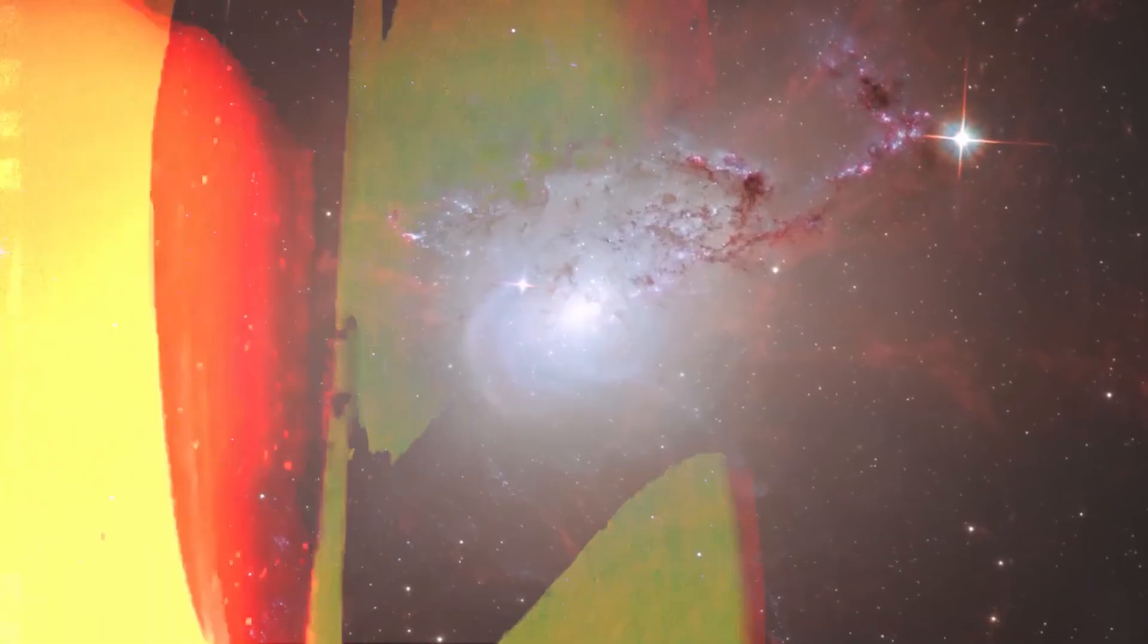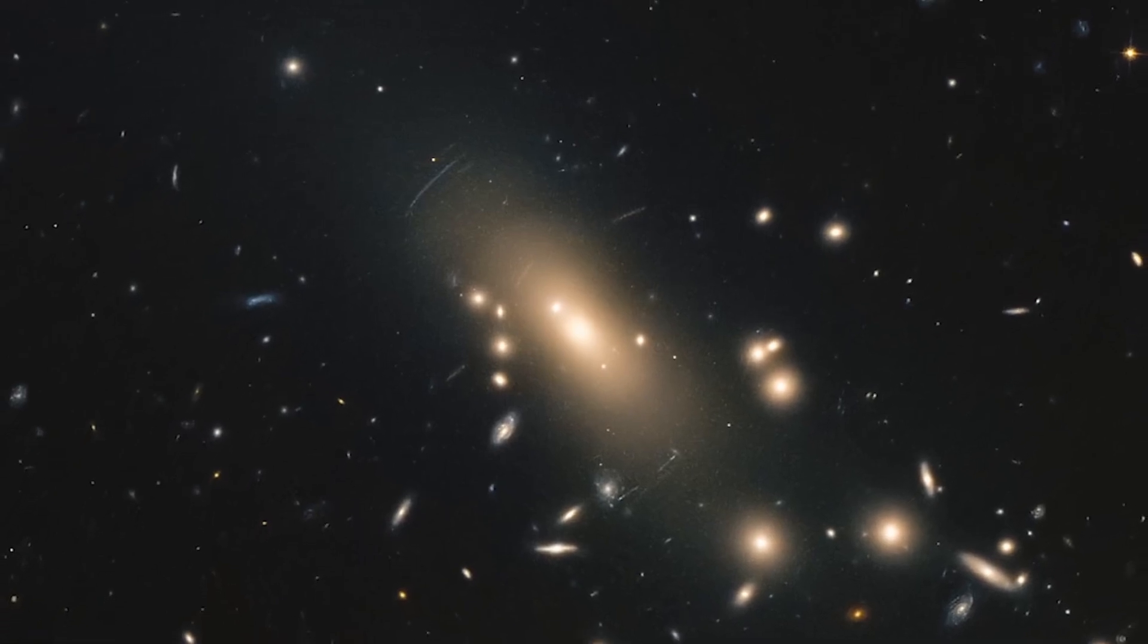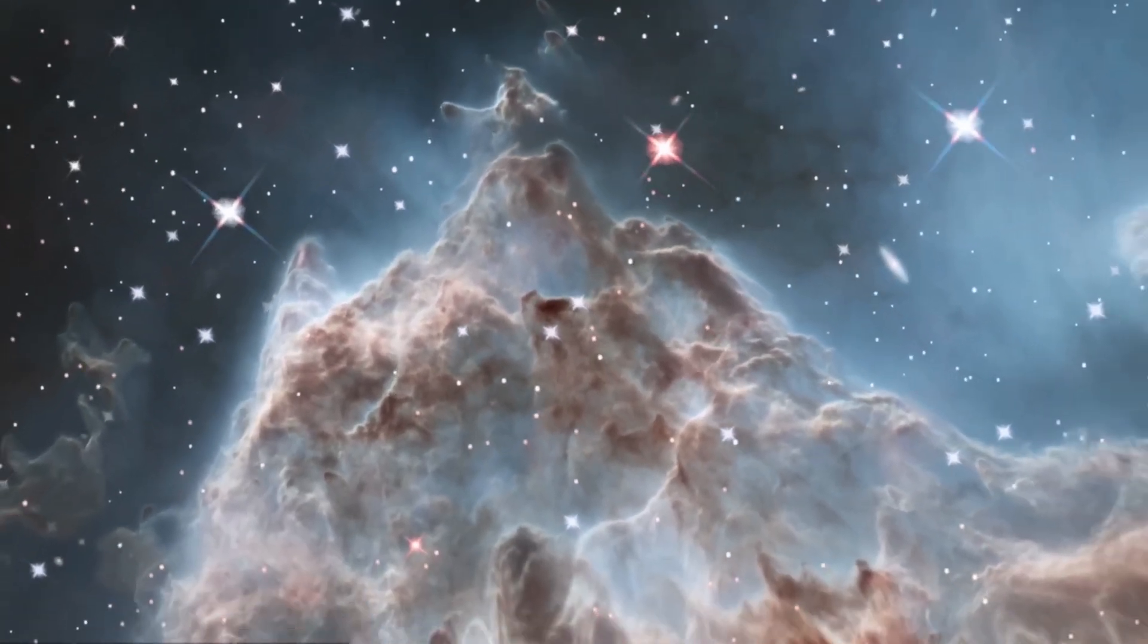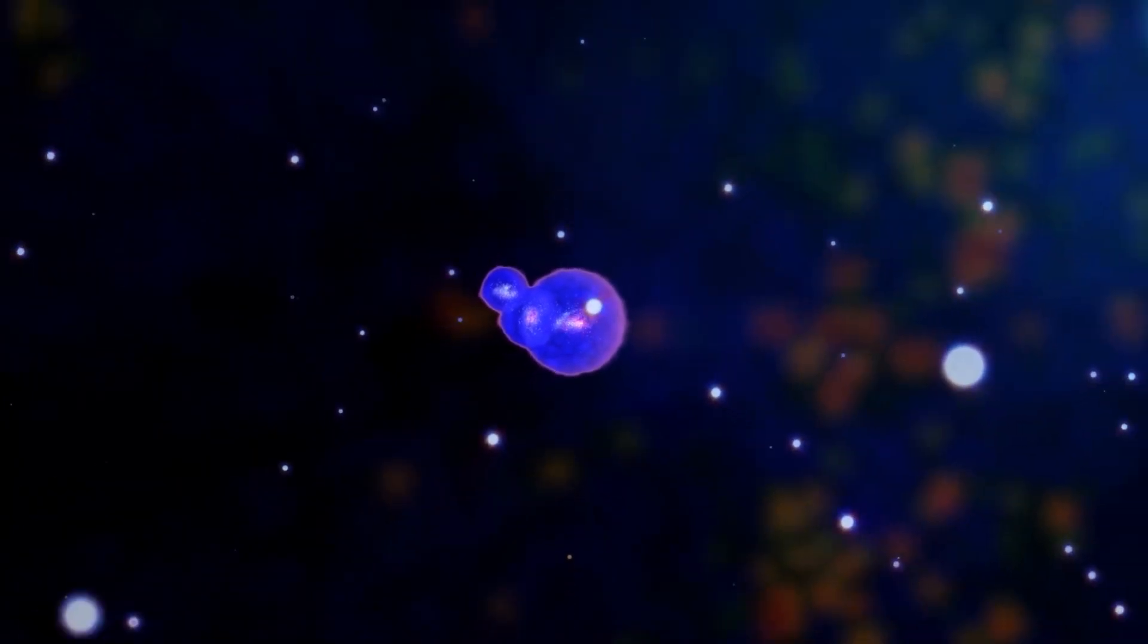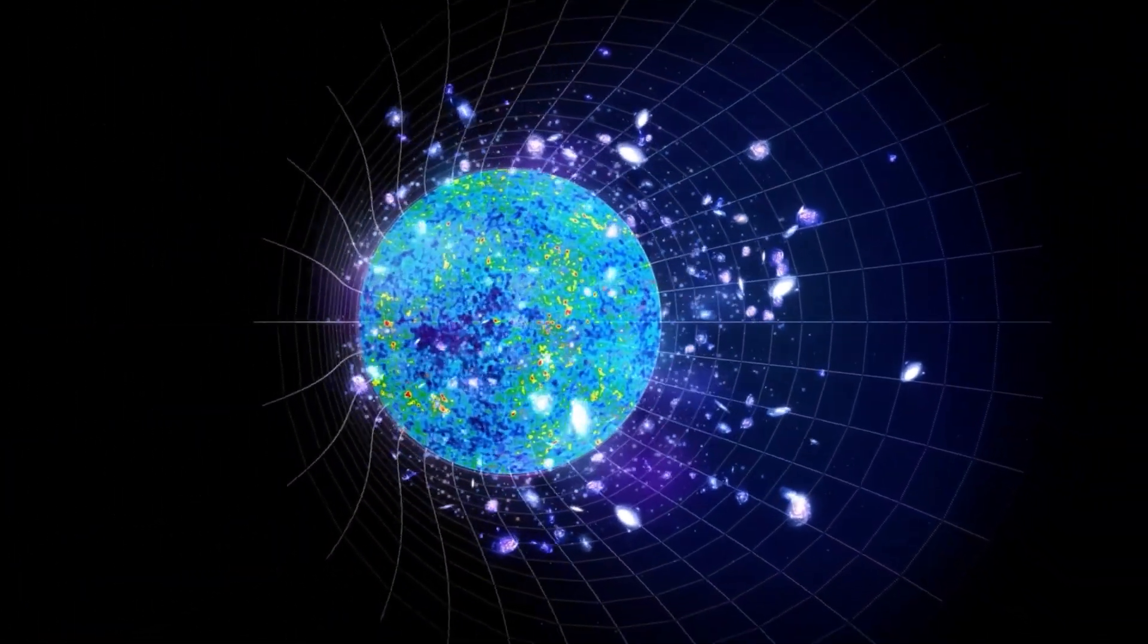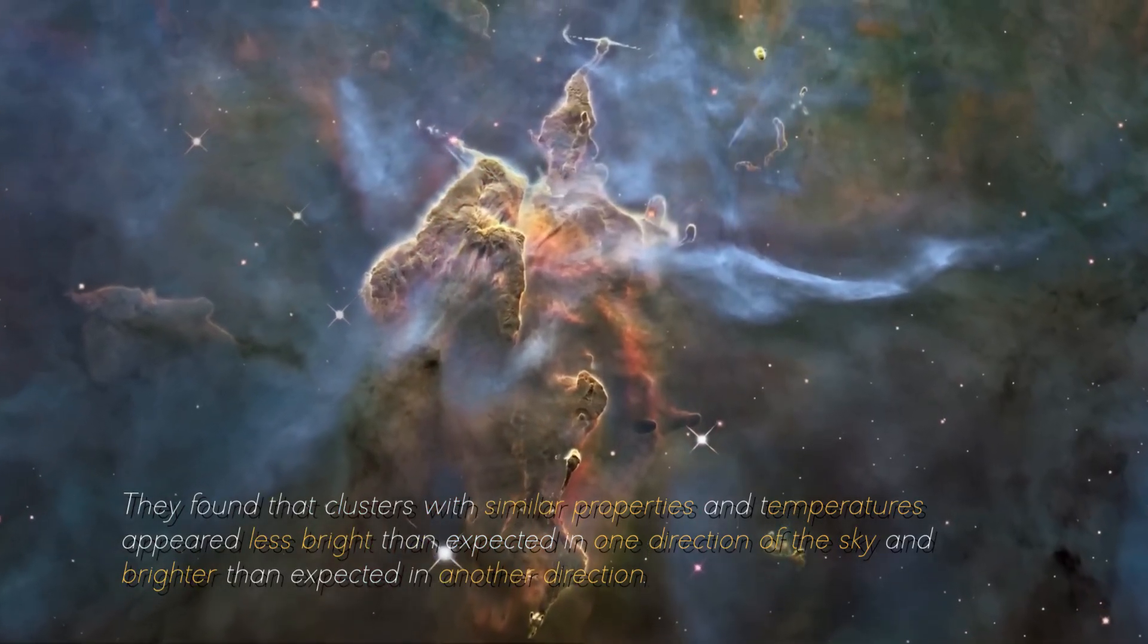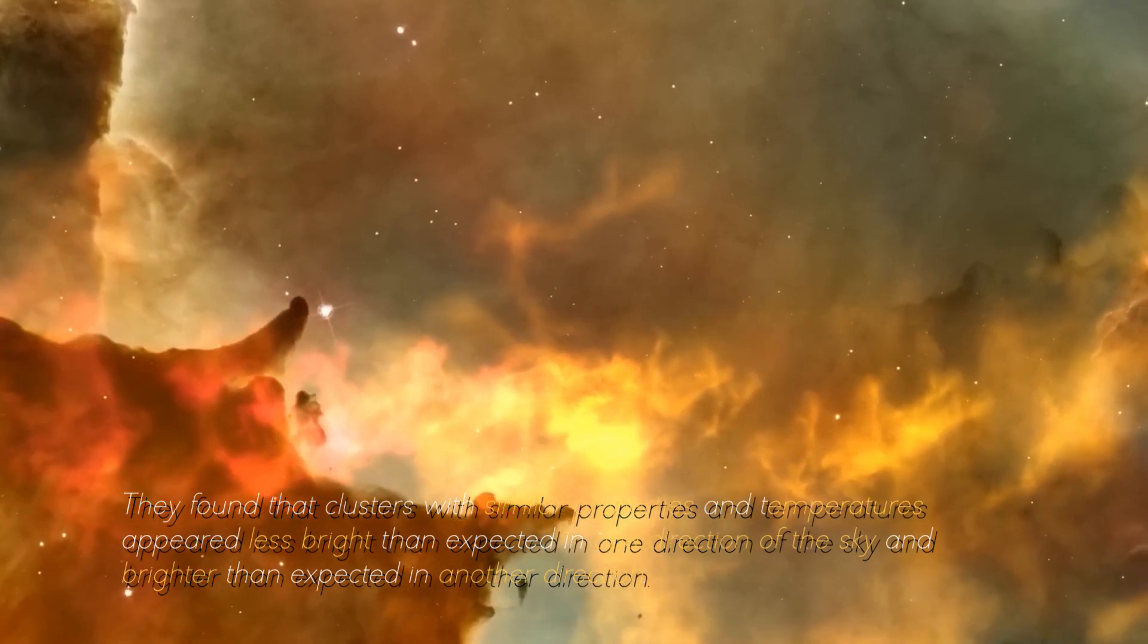However, in today's universe this could not be true. The researchers studied the behavior of more than 800 galaxy clusters in the present-day universe in collaboration with colleagues from the University of Bonn and Harvard University. If the isotropy hypothesis were correct, the clusters should have uniform properties across the sky. However, they observed significant differences. They compared data from X-ray temperature readings of the extremely hot gas found in the clusters with the brightness appearance of the clusters on the sky. One would expect clusters with the same temperatures and the same distance to appear equally bright, but this is not what was found. They found that the clusters with similar properties and temperatures appeared less bright than expected in one direction of the sky and brighter than expected in another direction.